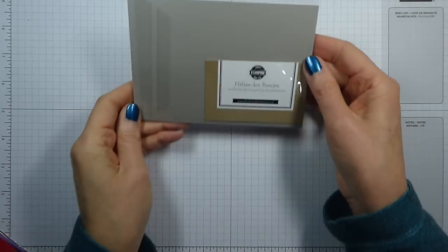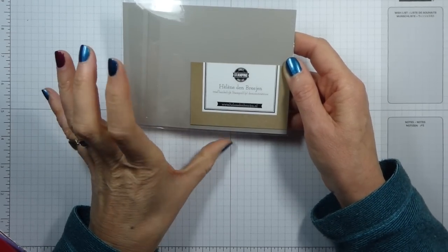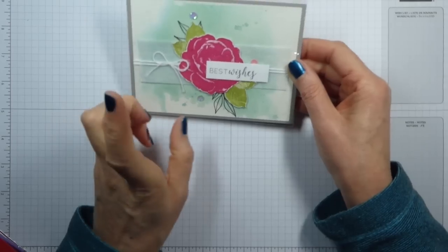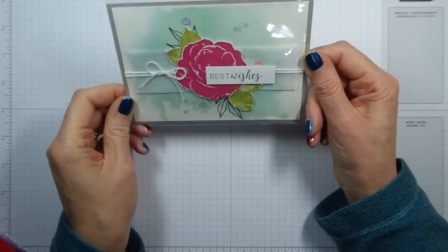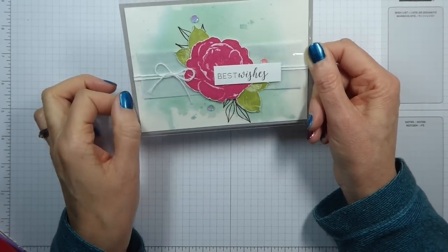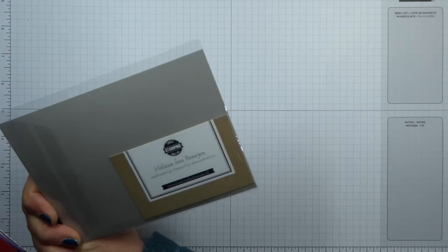Next we have this, one of the swaps I got at that event from Helene Denbregen who is another of Michelle's downline. Really pretty card. Don't have this stamp set but really pretty and obviously she came from the Netherlands to join us.